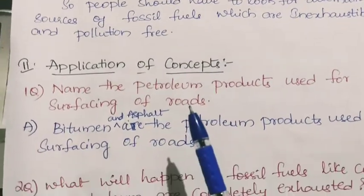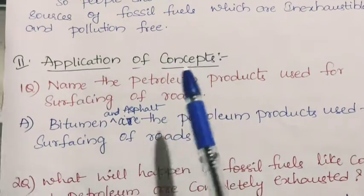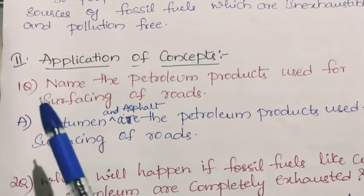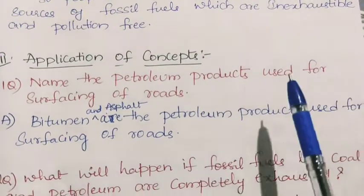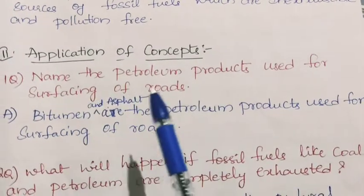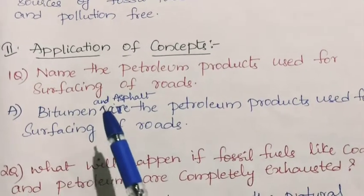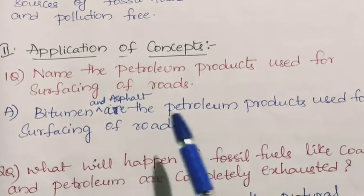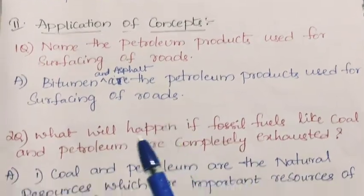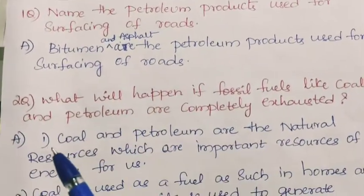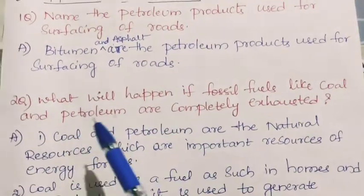Next category: application of concepts. First question: name the petroleum products used for surfacing of roads. Bitumen and asphalt are the petroleum products used for surfacing of roads.